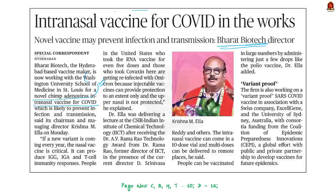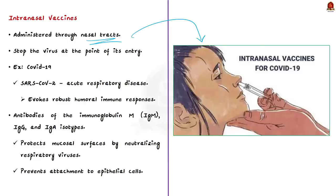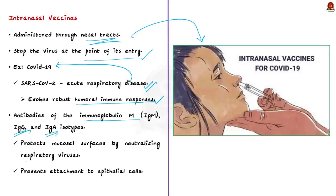Today we are going to focus on the type of vaccine it is — the intranasal vaccine. As the name suggests, these vaccines are administered through the nasal tracts, that is through the nose. The idea is to stop the virus at the point of entry itself, so the focus here is triggering immune response in the nose. Let me take the example of COVID-19 to make you understand. SARS-CoV-2 was identified as the cause of an acute respiratory disease known as coronavirus disease 2019, or COVID-19.